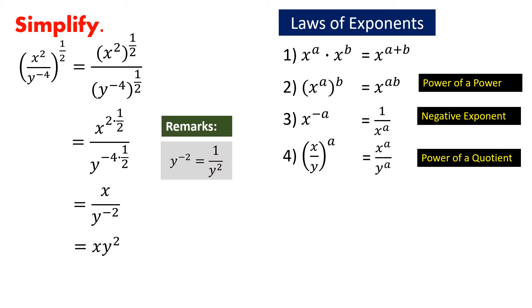Note that y to the power negative 2 is equal to 1 all over y squared. Hence, 1 all over y to the power negative 2 is equal to y squared. In general, if we have 1 all over x to the power negative 2, notice that the negative exponent is already in the denominator. So we have to get the reciprocal of that, which would give us x to the power 2.